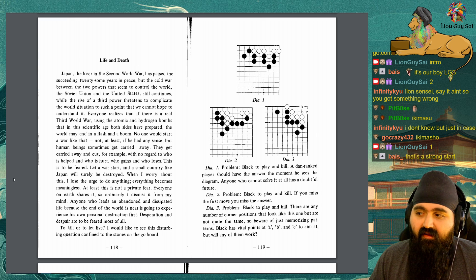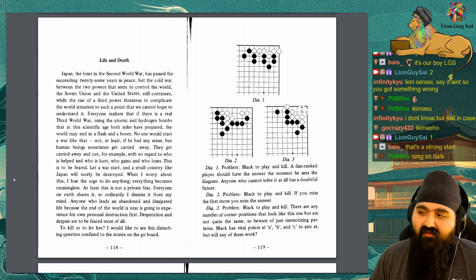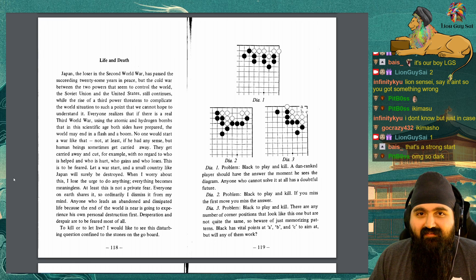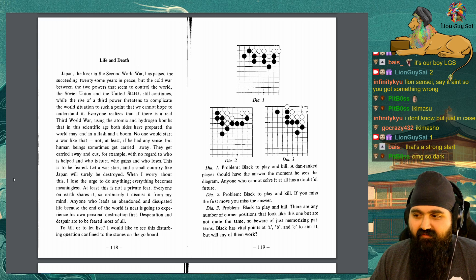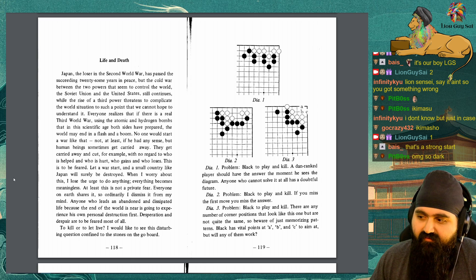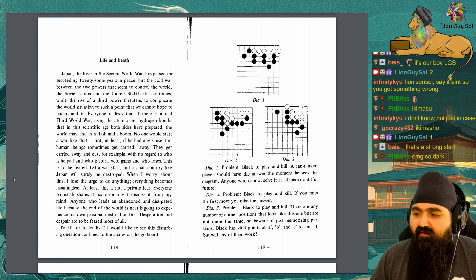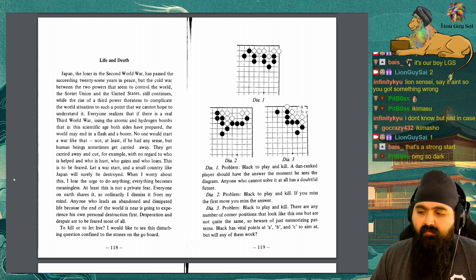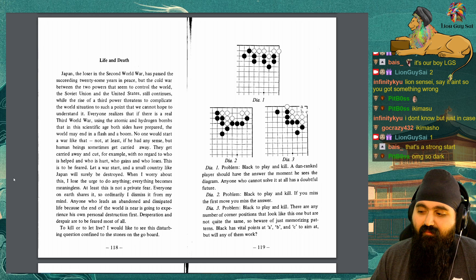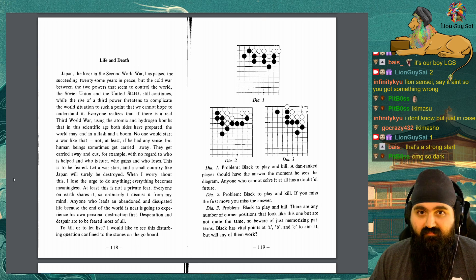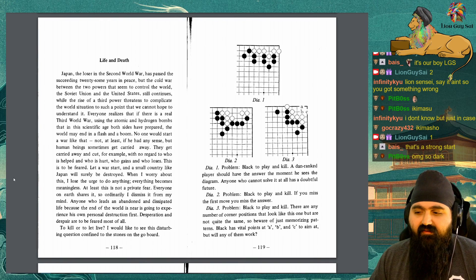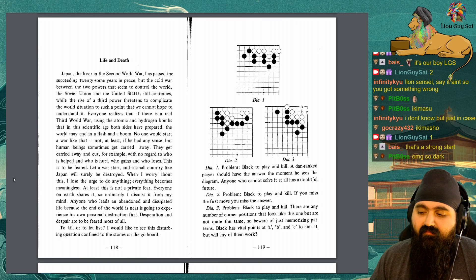No one would start a war like that, at least if he had any sense. But human beings sometimes get carried away. They get carried away and cut, for example, with no regard to who is helped and who is hurt, who gains and who loses. This is to be feared. Let a war start and a small country like Japan will surely be destroyed. When I worry about this, I lose the urge to do anything. Everything becomes meaningless. At least this is not a private fear. Everyone on earth shares it, so ordinarily I dismiss it from my mind. Anyone who leads an abandoned and dissipated life, because the end of the world is near, is going to be experiencing his own personal destruction first. Desperation and despair are to be feared most of all. To kill or to let live? I would like to see this disturbing question confined to the stones on the go board.